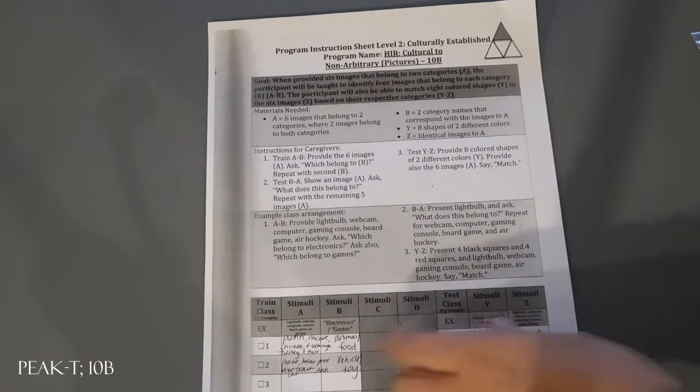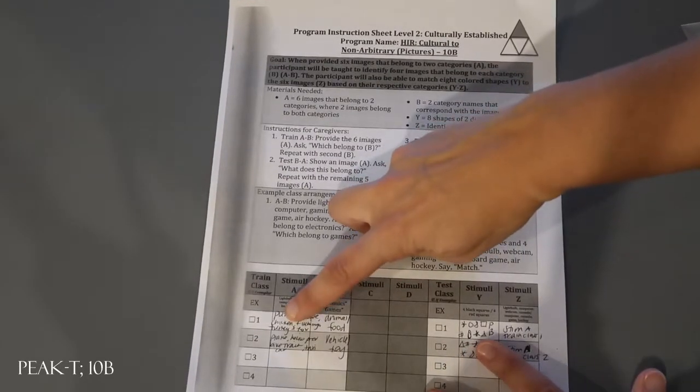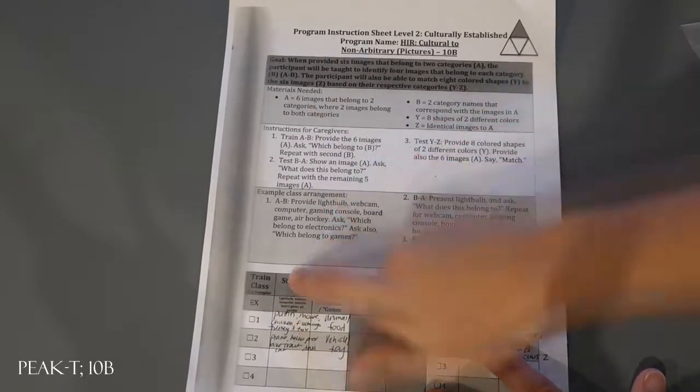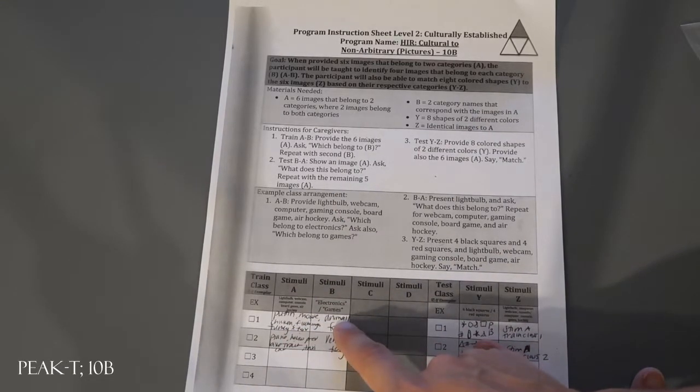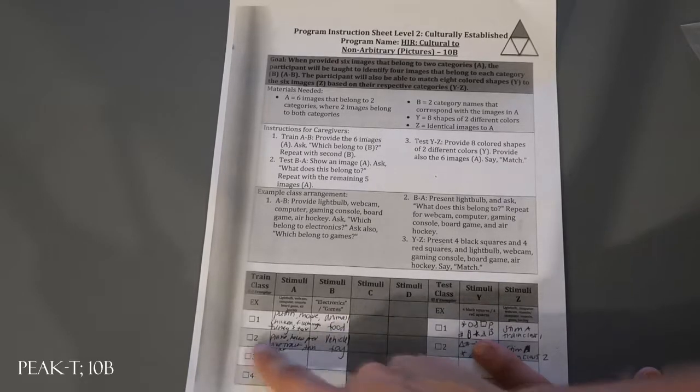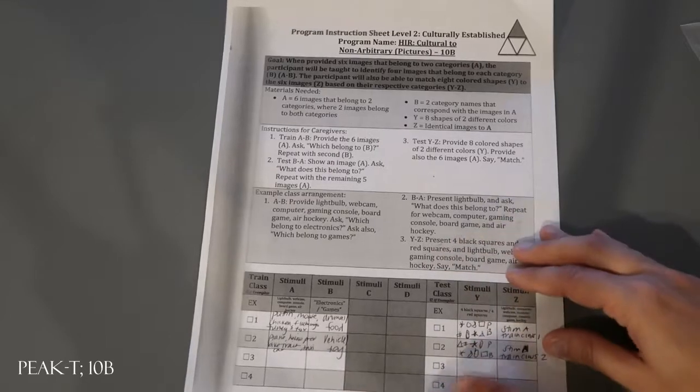Stimuli B matches along, so again we have puffin, mouse, chicken, flamingo, turkey, and fox. Stimuli A train class one, for stimuli B the categories that correspond are animal and food. And then for our train class two, plane, helicopter, taxi, bike, train, car, and those are all vehicles and a toy.